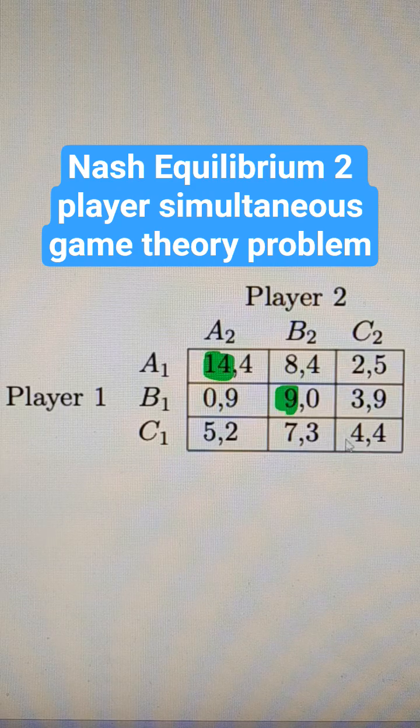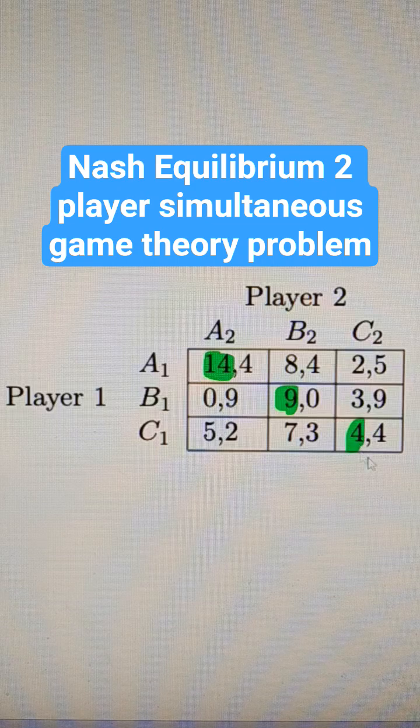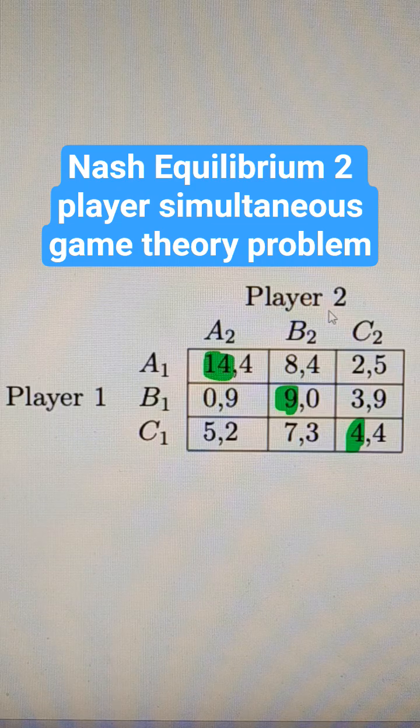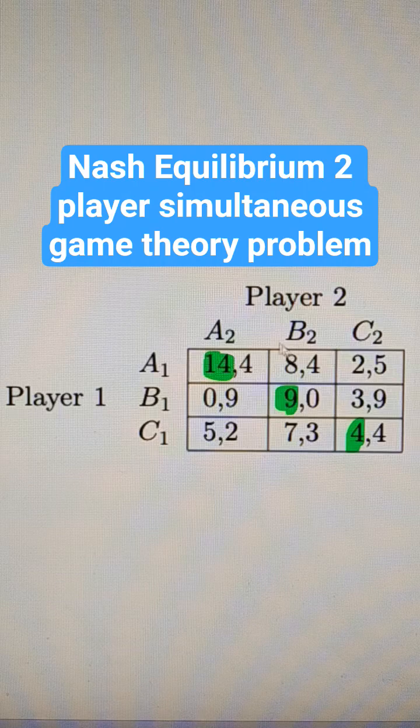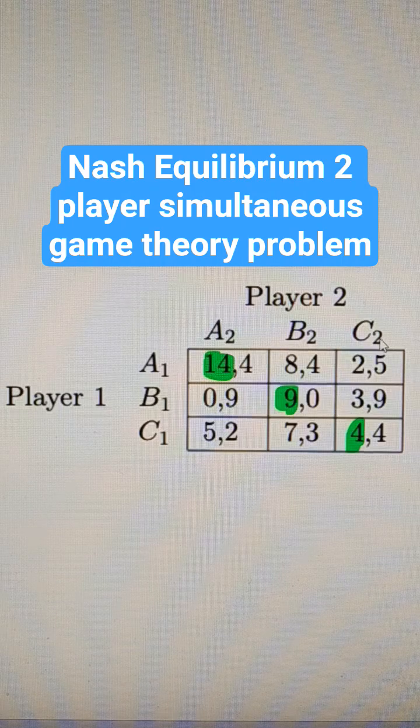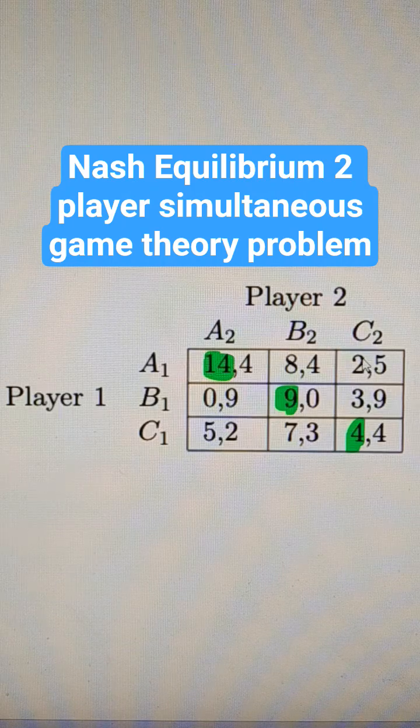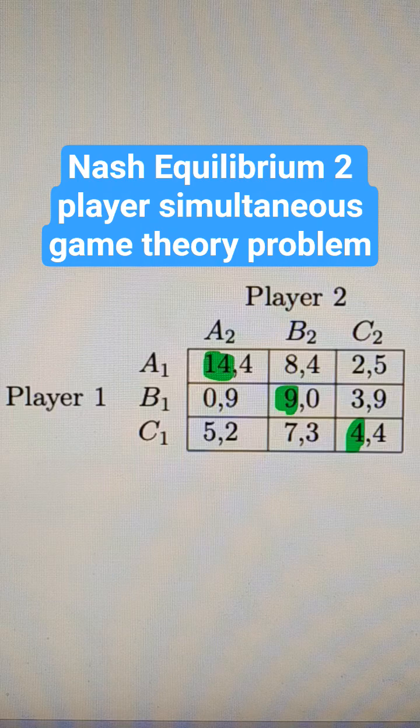We're just going to circle or highlight the best responses from player 1 after player 2 chooses A2, B2, or C2. Now we'll switch this up and let's use yellow.